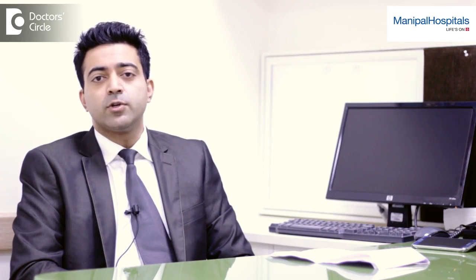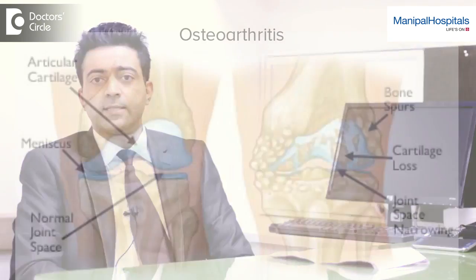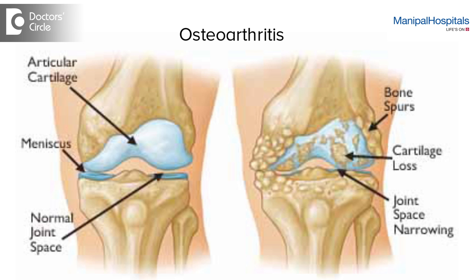Types of arthritis: first and foremost, the most important is osteoarthritis, or age-related arthritis, which mainly affects the elderly population. But nowadays it's also seen in people as young as their late 40s and early 50s.